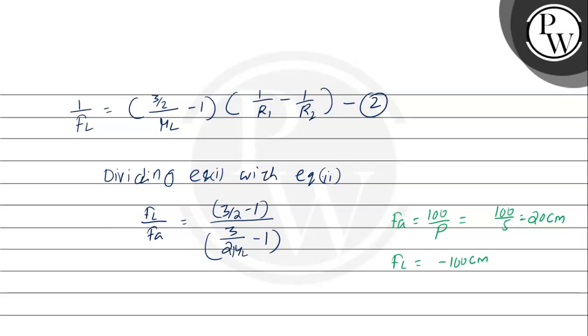Now we will substitute the values directly. This becomes minus 100 by 20, and this becomes 3 by 2 minus 1, which gives 1 by 2. So we have 3 by 2 mu_l minus 1.